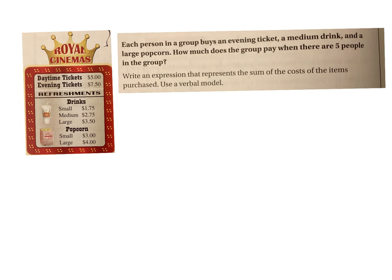Let's do a problem solving one. Each person in a group buys an evening ticket, a medium drink, and a large popcorn. How much does the group pay when there are 5 people? There are 5 people and they each are getting all of this. So I'm going to call the evening ticket E, the medium drink M, and the popcorn P. It's 5 times the evening ticket, plus 5 times the medium drink, plus 5 times the popcorn.